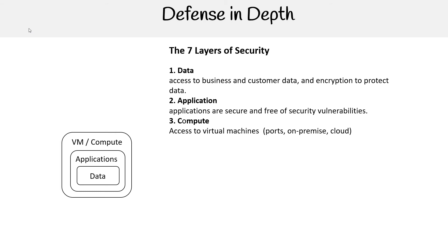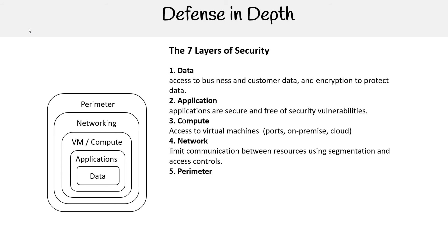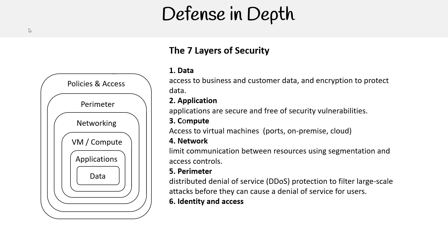Then there's the network — limit communications between resources using segmentation and access controls. Then the perimeter: distributed denial-of-service protection to filter large-scale attacks before they can cause a denial of service for users. And then identity and access: controlling access to infrastructure and change controls.